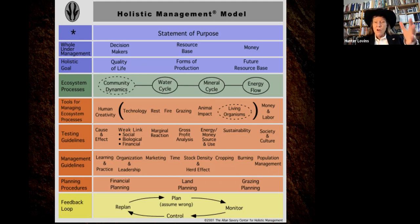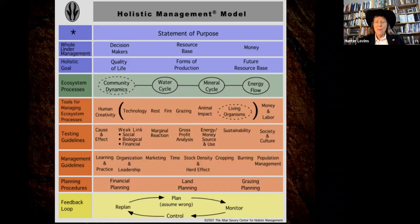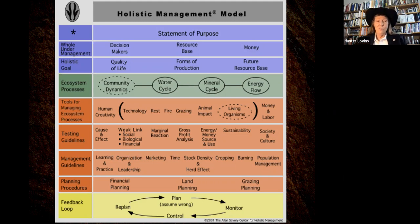If you're managing land or working with farmers or ranchers, I highly recommend taking the Savory Institute Holistic Management training. The tools include how you test whether you're going in the right direction, what the management guidelines are, how you do planning, and what your feedback loops are — are you getting information back to know if you're getting better off or worse off? The Savory Institute has implemented a system called Land to Market, working with ranchers implementing this.